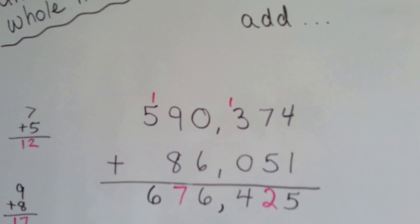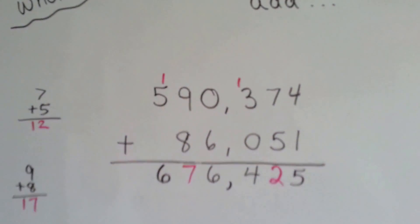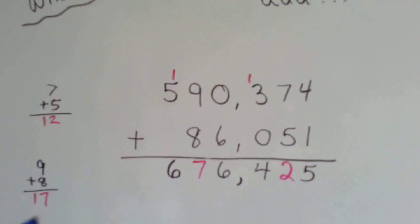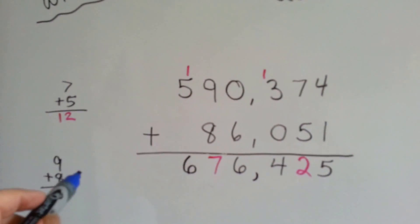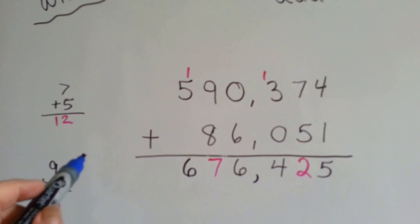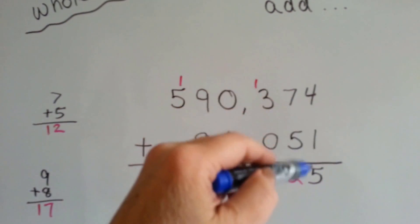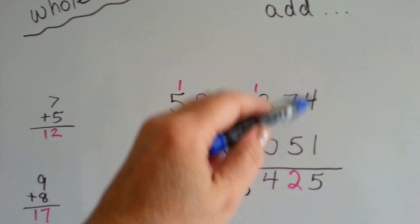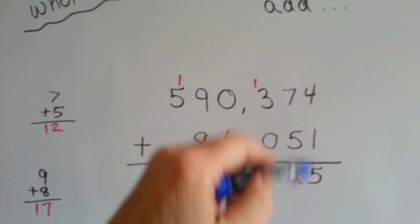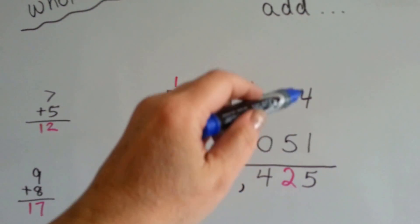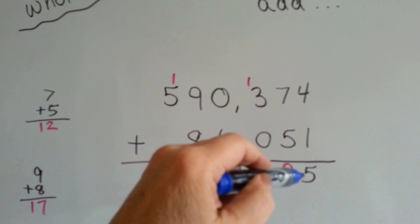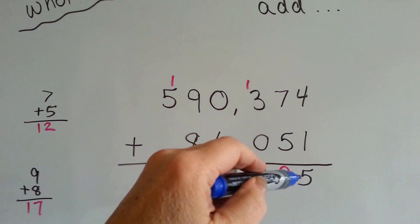The first thing we're going to do is try adding. So let me show you what I did here. We start with the ones column, always, and 4 plus 1 is 5.